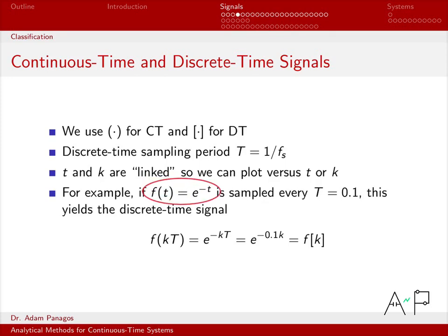Another thing that we often do is if I have a continuous-time signal and I want to sample that signal to get the discrete-time equivalent, doing that is very easy. All I have to do is replace the continuous time variable t with the discrete time quantity k times the sampling period. So again if my sampling period is 0.1, when I replace t with kT I end up with k times 0.1.